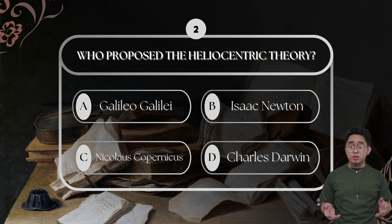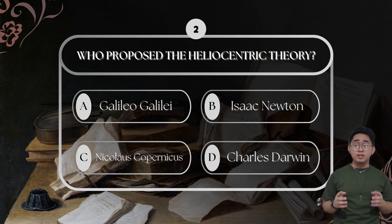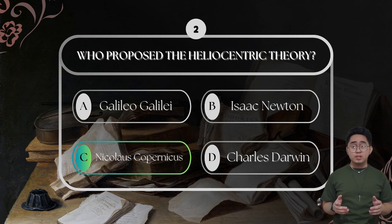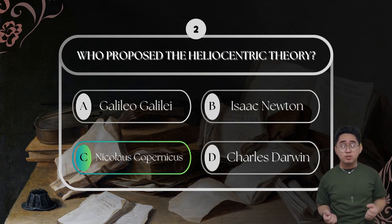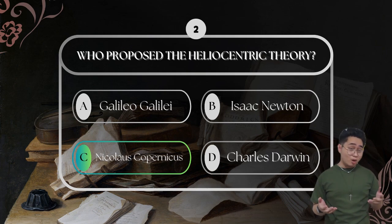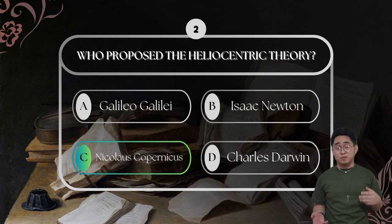For question number two: who proposed the heliocentric theory? The answer is Nicholas Copernicus. Nicholas Copernicus was the one who proposed the heliocentric model. His theory marked a turning point in science because it redefined how people understood their place in the cosmos, or in the universe. Although controversial at the time, his idea became a starting point for the scientific revolution.